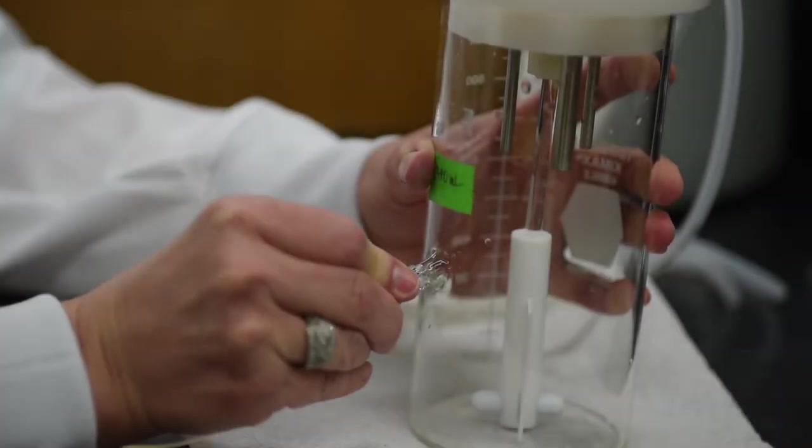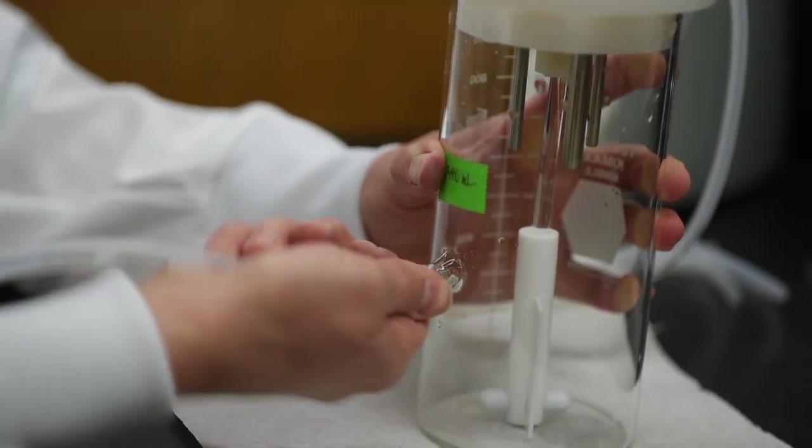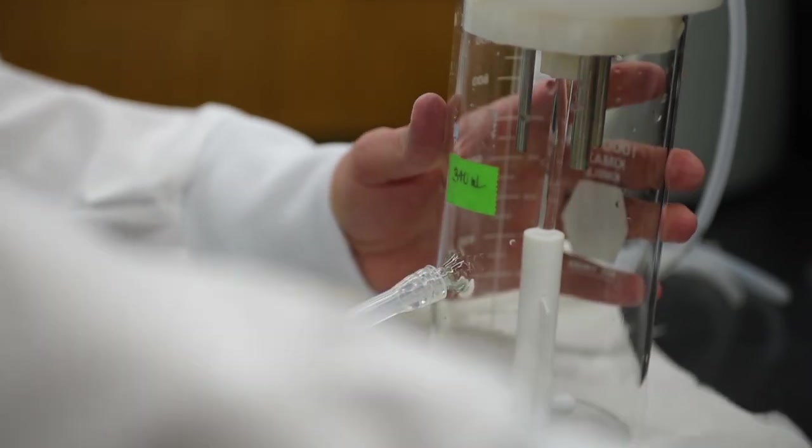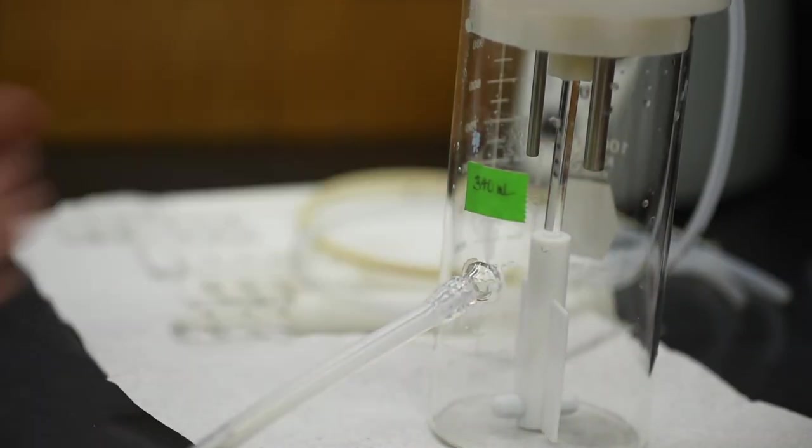The effluent is gravity fed. Attach size 18 tubing of sufficient length from the effluent spout of the reactor to a waste carboy held in secondary containment on the floor.